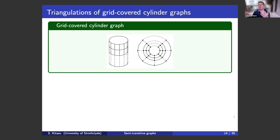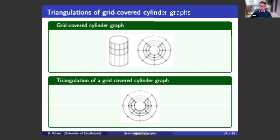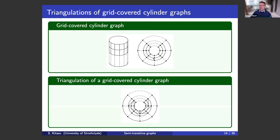There are many nice classes of planar graphs, and one nice class is the grid-covered cylinder graph. You have a cylinder that is a grid, and if you redraw it differently you get a subclass of planar graphs with many layers. This wouldn't be interesting because it is pre-colorable — and as I told you, pre-colorable is not interesting. But if you triangulate the grid-covered cylinder graph, each face can be triangulated in one way or another.